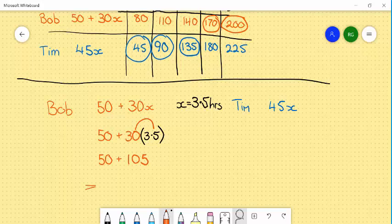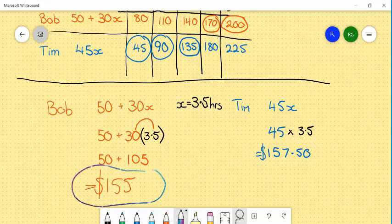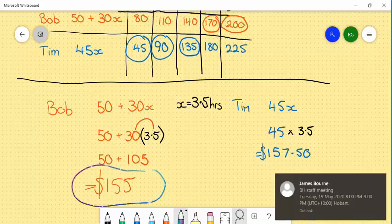For Tim, it should be a little simpler. 45 multiplied by 3.5, which equals $157.50. You can now see that it is marginally cheaper to order Bob's services for 3.5 hours than Tim's.